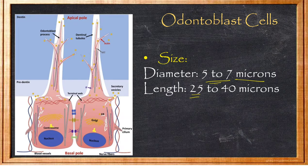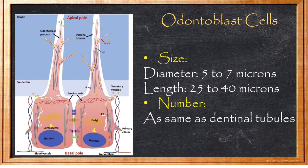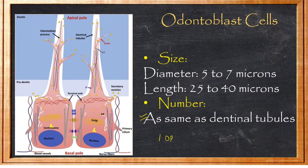Each odontoblast cell has one odontoblast process, meaning one odontoblast process corresponds to one dentinal tubule. Therefore, each dentinal tubule represents one odontoblast cell body.